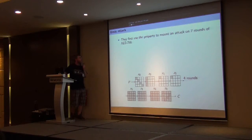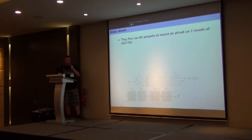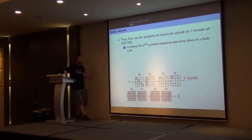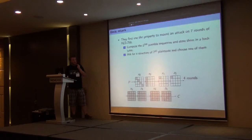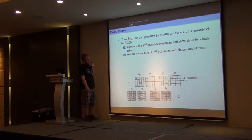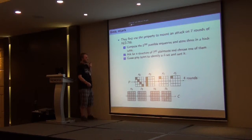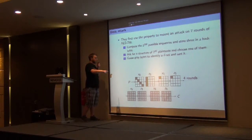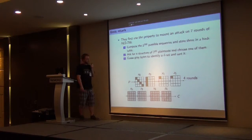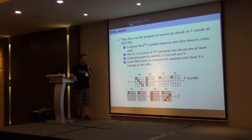Demirci and Selçuk first used this property to mount an attack on seven rounds of AES-256. There is an offline phase where we compute all possible sequences and store them in a hash table. Then in the online phase, we begin by asking for a structure such that the main diagonal is active and the other bytes are constant, and we choose one of the messages. Then we guess the values of its gray bytes and propagate the differences from C1 to X4 in order to identify and sort the delta-set.